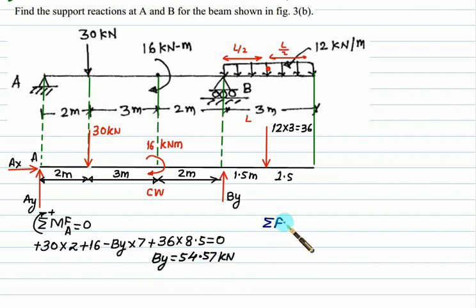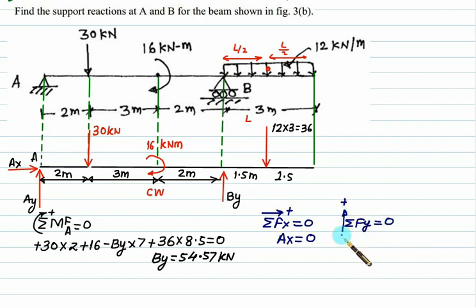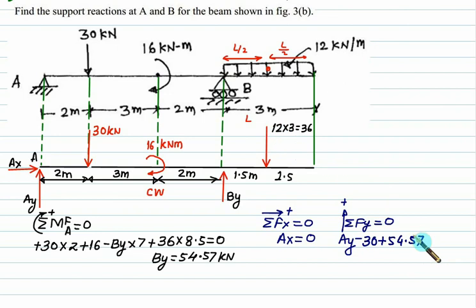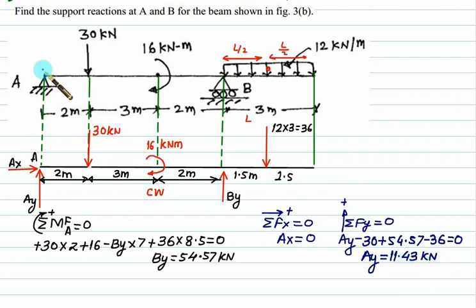For sigma Fx equal to zero with rightward positive, we have only one entry, so Ax equal to zero. For sigma Fy equal to zero with vertically upward positive: Ay is positive, 30 is negative, the couple does not appear here, By is positive at 54.57, and 36 is negative. Solving: Ay minus 30 plus 54.57 minus 36 equal to 0, giving Ay equal to 11.43 kilonewton. Both By and Ay are positive so assumed directions are correct. Since Ax equals zero, Ay itself equals the reaction Ra.